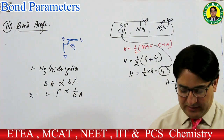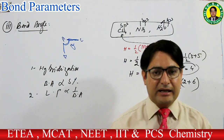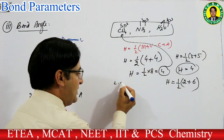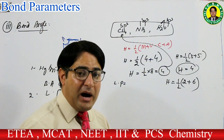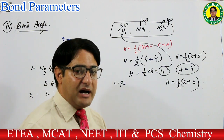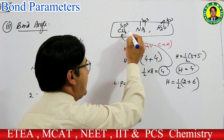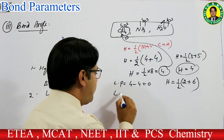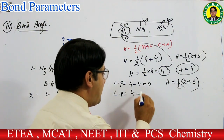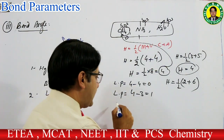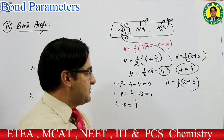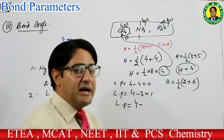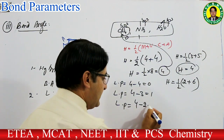Lone pair نکالنا: lone pair = hybrid orbital − number of bonded items۔ Methane: 4 − 4 = 0 lone pairs۔ Ammonia: 4 − 3 = 1 lone pair۔ Water: 4 − 2 = 2 lone pairs۔